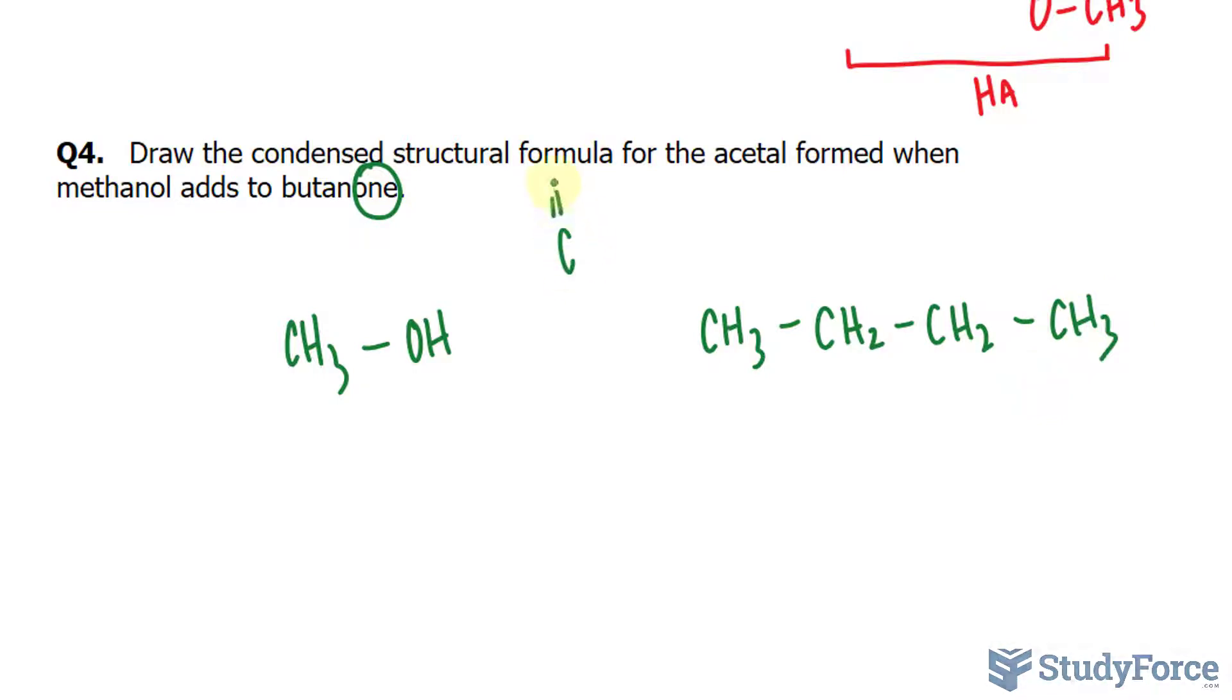Butanone means that we'll have a carbonyl group somewhere, and since there's no number at the front, we can't put it here because that would suggest we need another carbon. That means we have to put it on the second carbon. So we put the double bonded oxygen here and we remove the two hydrogens.